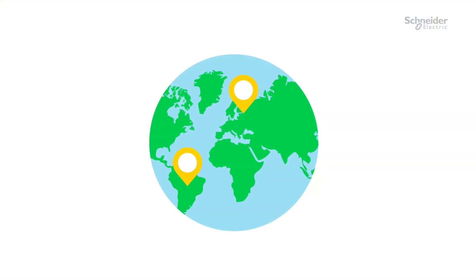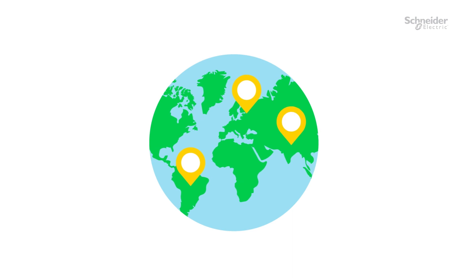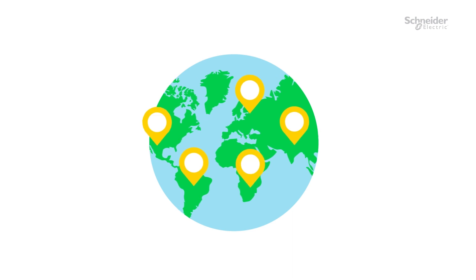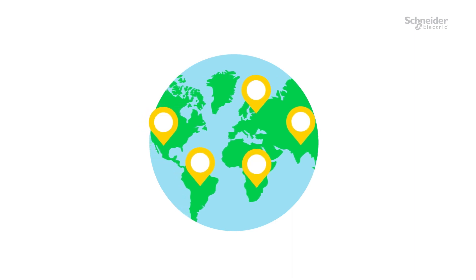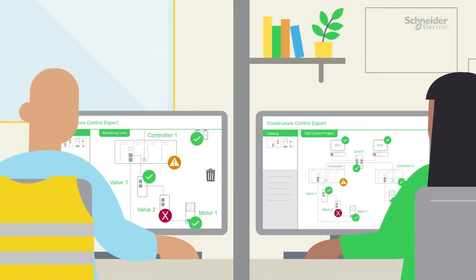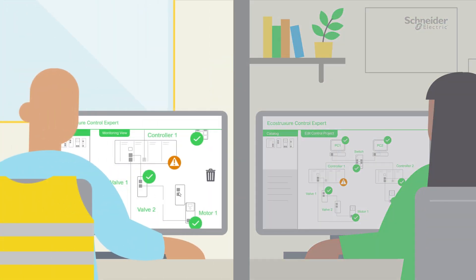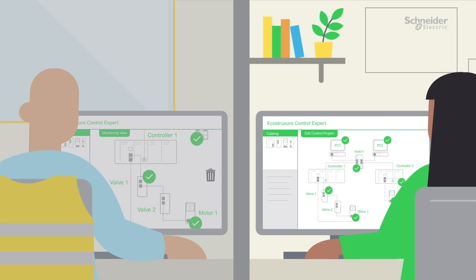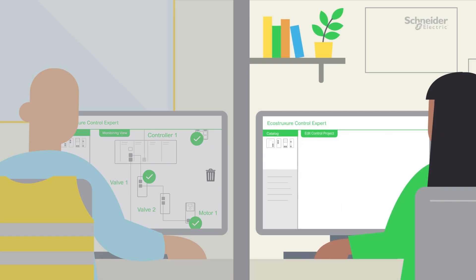Plant staff can now collaborate in real time from everywhere on the entire automation architecture with a multi-controller system. On-site, a maintenance engineer replaces the faulty device with a new one. In the home office, the automation engineer adapts the logic of the controller program for the new equipment and verifies network consistency.